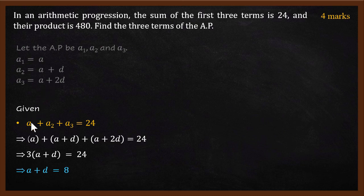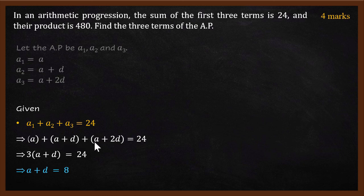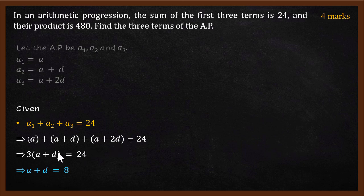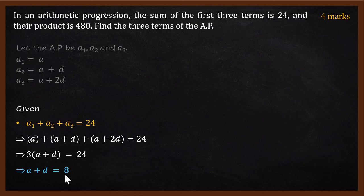They have given that the sum of three terms is 24. Expanding using the standard form: a, plus a plus d, plus a plus 2d equals 24. Simplifying, a plus a plus a becomes 3a, and d plus 2d becomes 3d, giving 3a plus 3d equals 24. Dividing both sides by 3, we get a plus d equals 8. This is the first important equation.